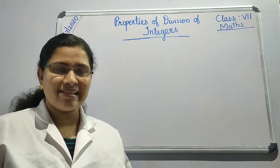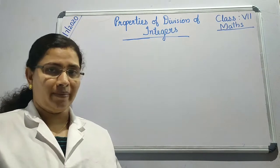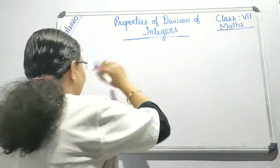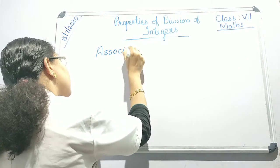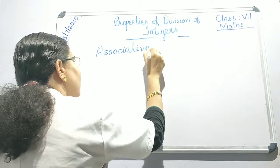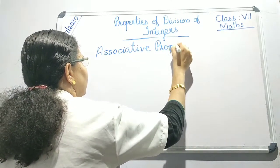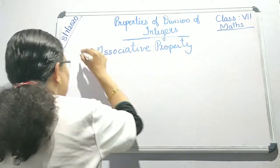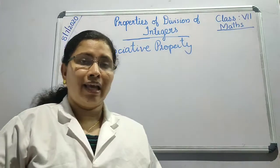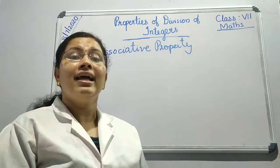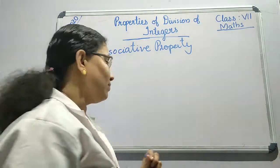Hello dear students. Now let us check the associative property — the associative property in the case of division. This is the sixth property. In the case of division, let us check the associative property with an example.